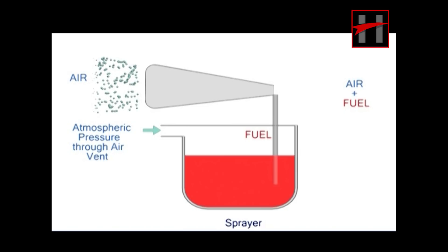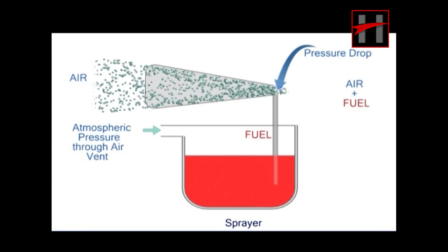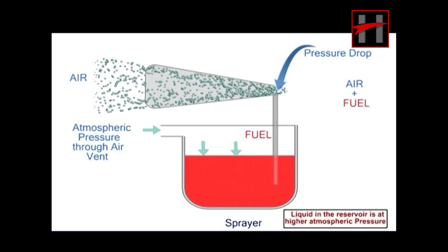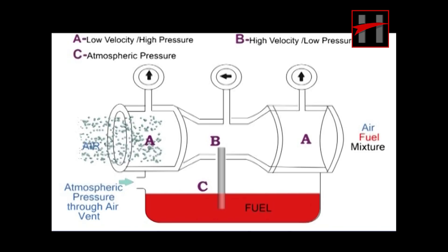When the piston of the pump is pushed inside, the velocity of air increases and the pressure reduces at the outlet of the liquid reservoir. The liquid in the reservoir is at higher atmospheric pressure. This pressure difference results in the rising of the liquid. The principle of this sprayer is applied in the carburetor.